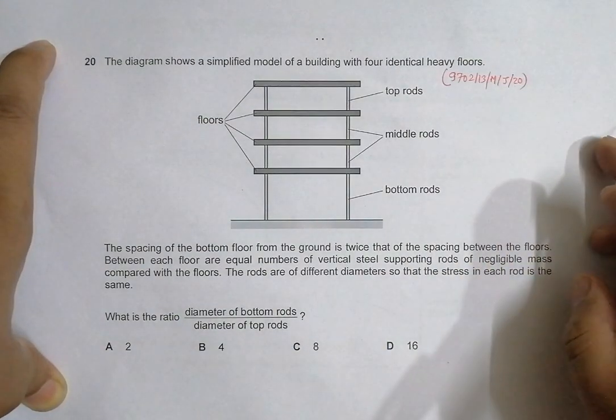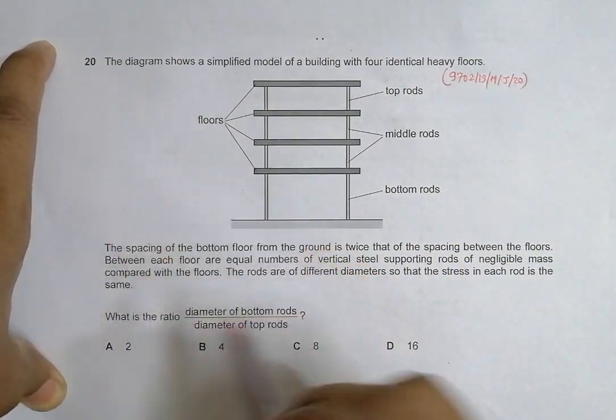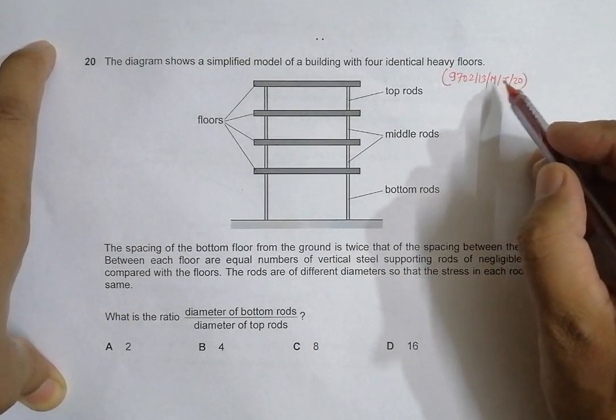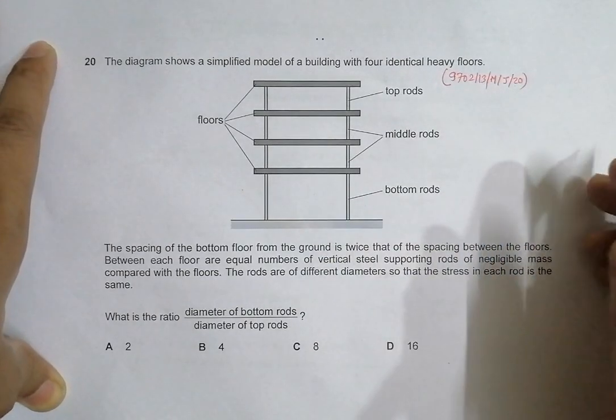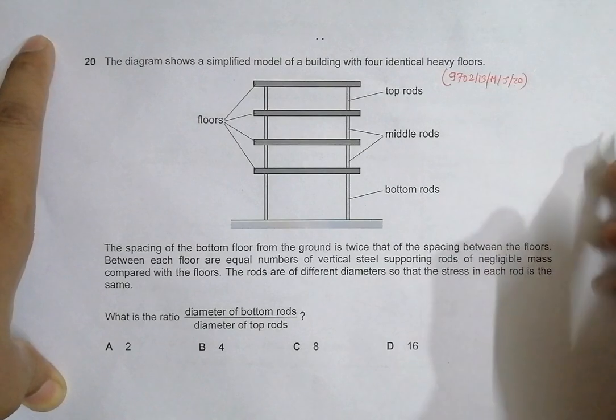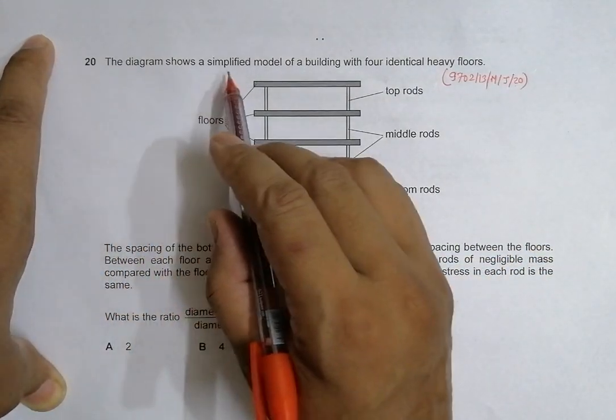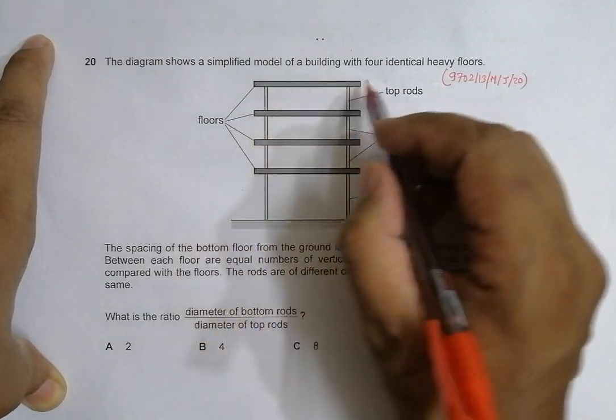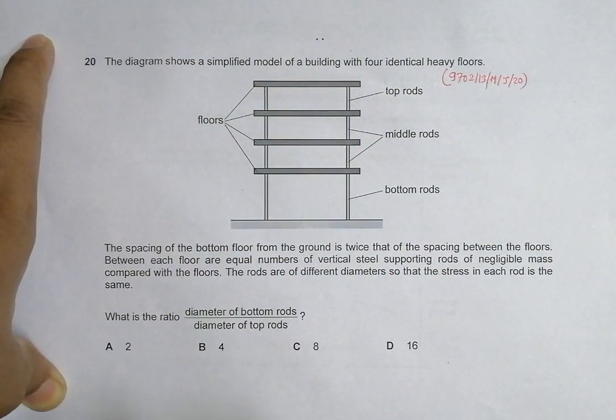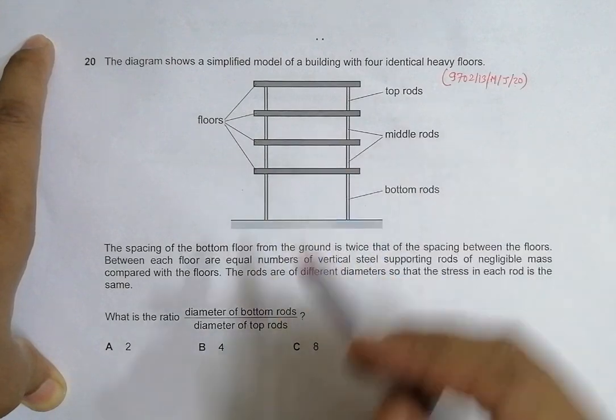Hello folks, after a long gap of about five days. This is 2020 May-June paper 1-3, question number 20. It's about properties of matter, specifically elastic properties. The diagram shows a simplified model of a building with four identical heavy floors.